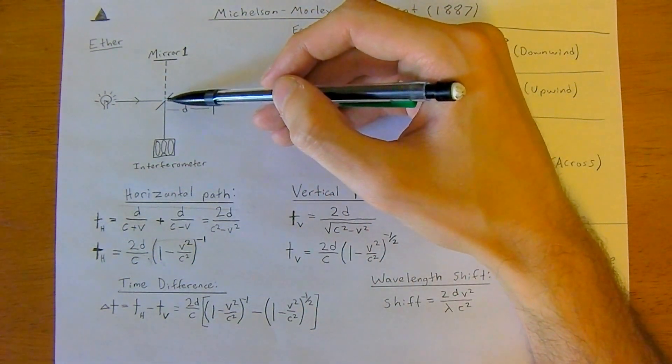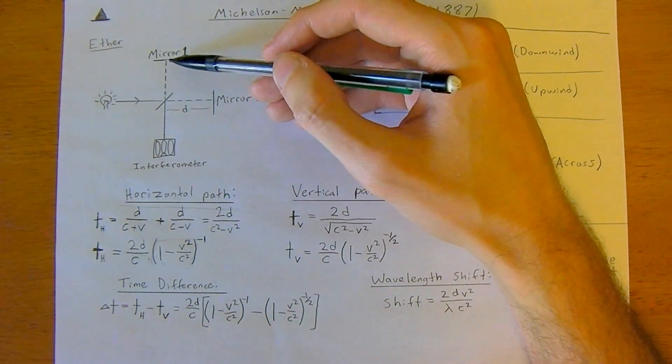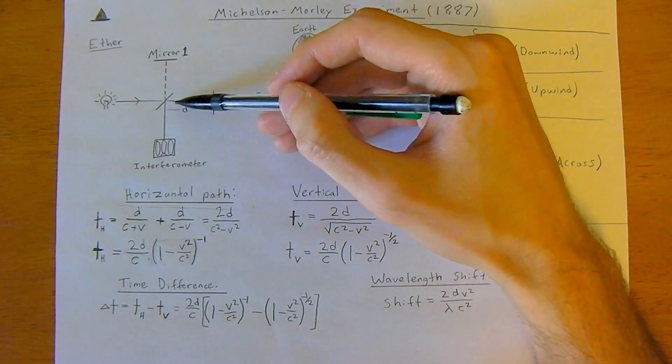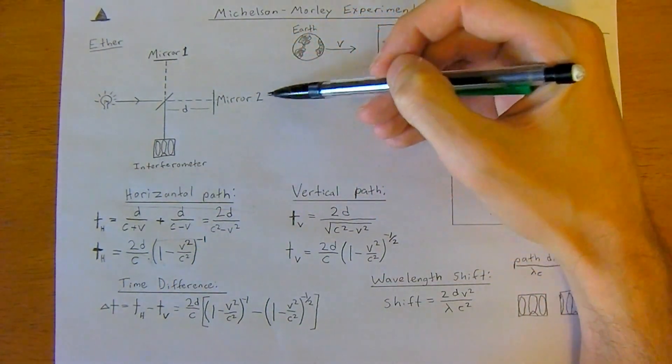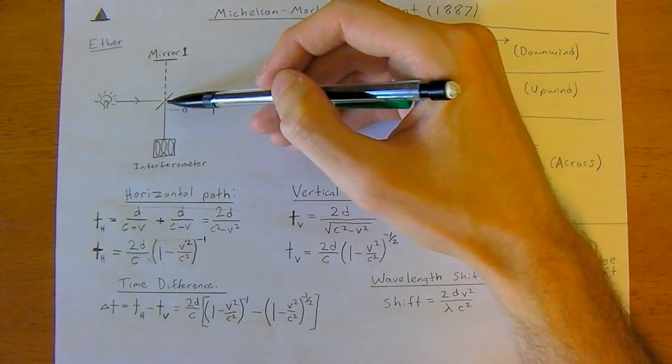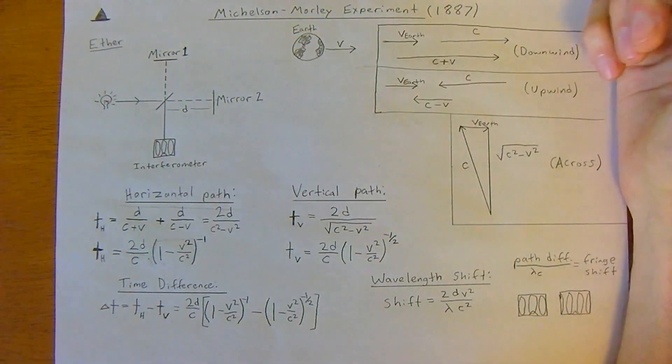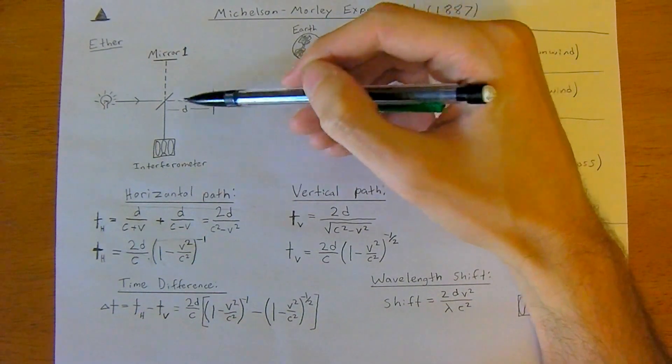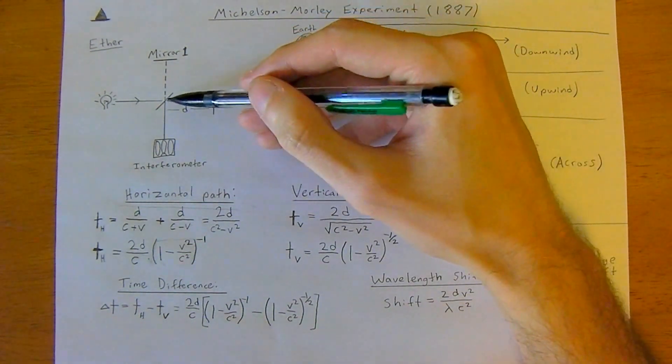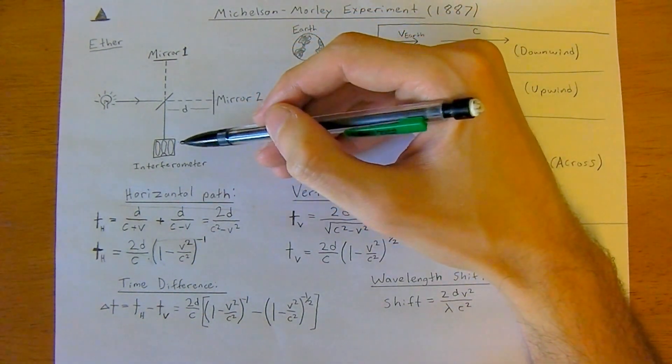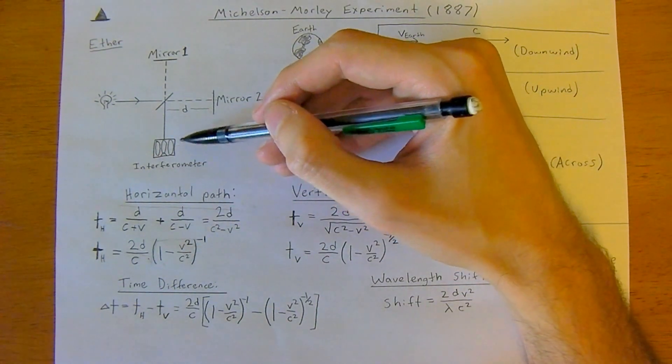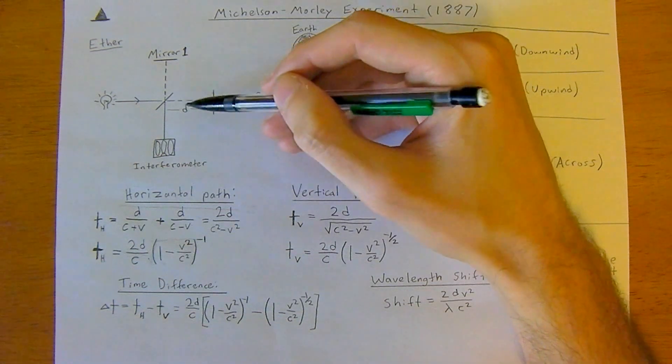The mirror split the light beam, so half of it traveled up to mirror one, bounced back down, and went to the receiver. The other half continued straight through, hit mirror two, went back to the mirror, and back to the receiver. In essence, it's just a race between two different light beams. If they both come back at the same time, you'll get a very telltale interference pattern which they can detect.